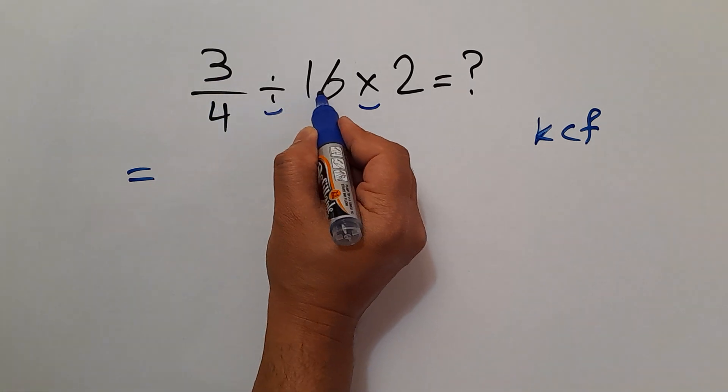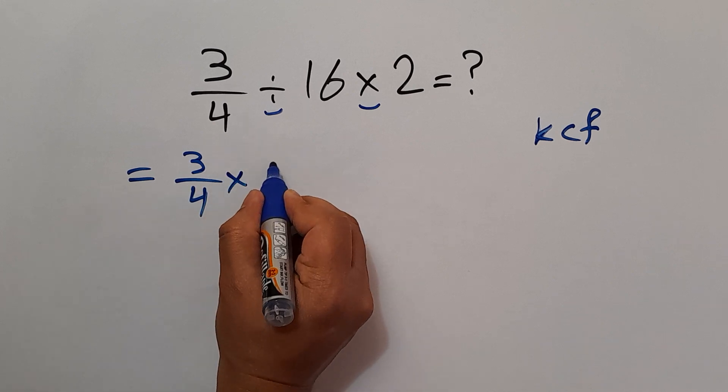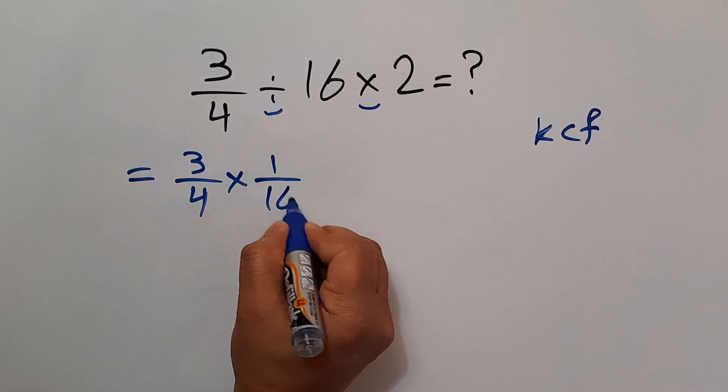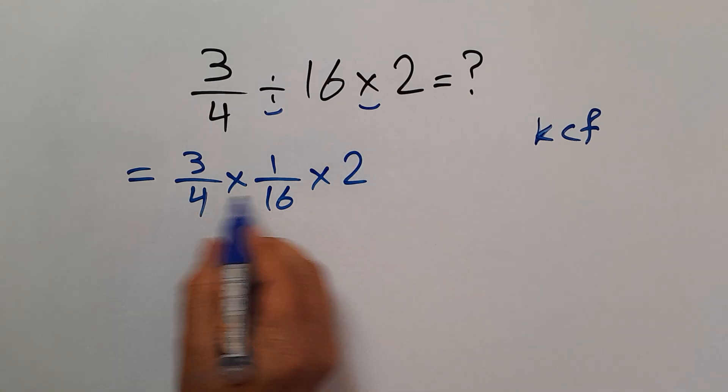...can be written as 3 over 4 times 1 over 16 then times 2. Now here we can write 3 times 1 times 2 over 4 times 16 times 1.